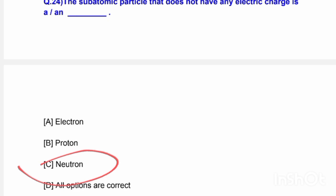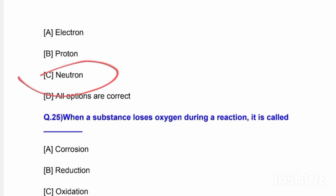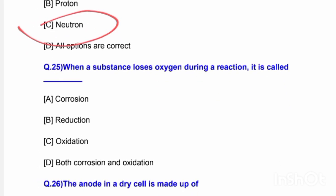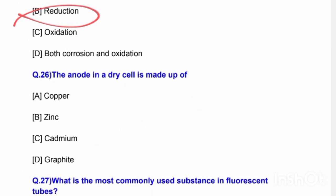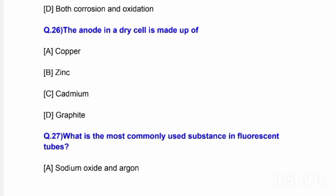Next question: When a substance loses oxygen during a reaction it is called — options are corrosion, reduction, oxidation, or both corrosion and oxidation. The correct answer is reduction — when a substance loses oxygen during a reaction, the process is called reduction.